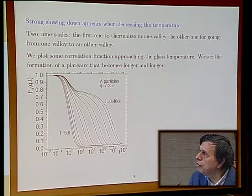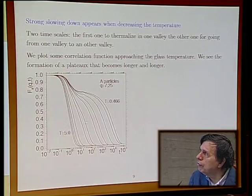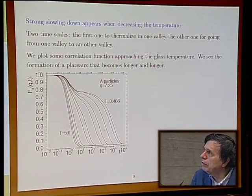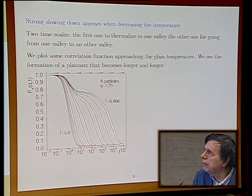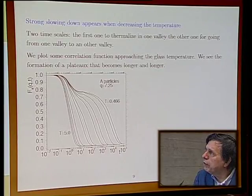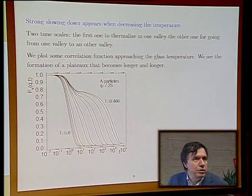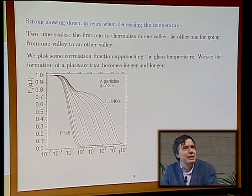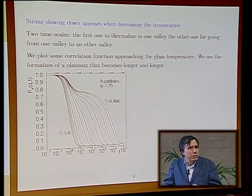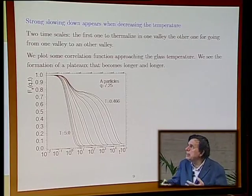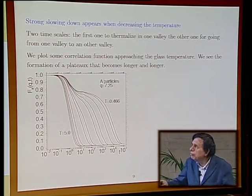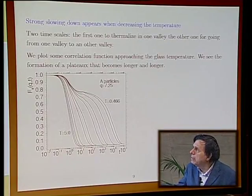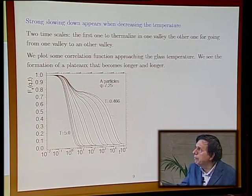You see that when you go towards the glass temperature, there is some kind of correlation and you have some decaying, some kind of formation of plateau. You have something like a two-scale relaxation. This two-scale relaxation essentially means the system first relaxes inside the valley, and after, when you start to form the valley, the system takes a much longer time to escape from the valley. The time of escape from the valley becomes larger and larger.